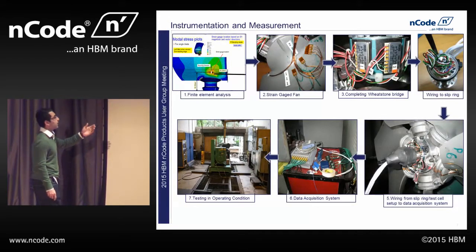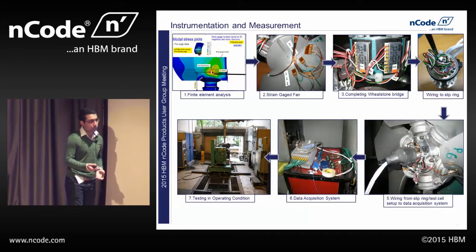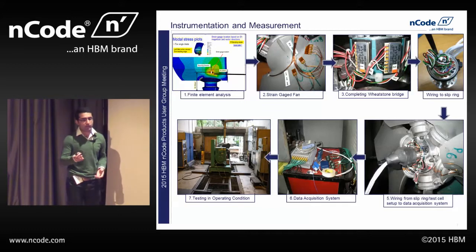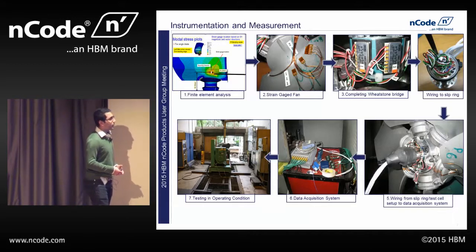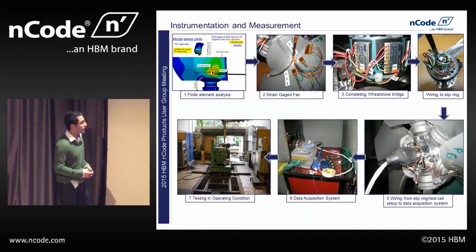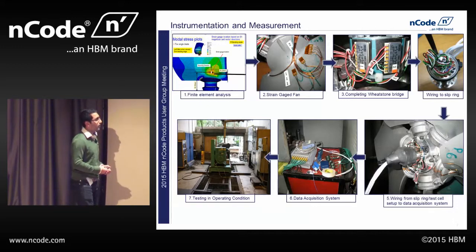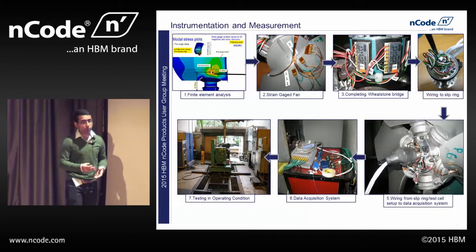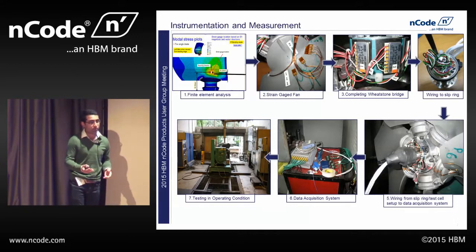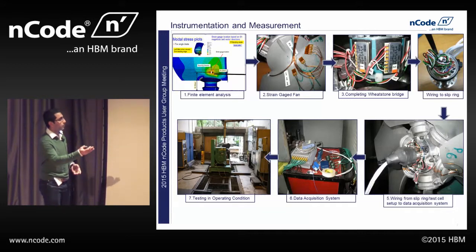For instrumentation, we do a pre-stress modal analysis — essentially a linear modal analysis with load stiffening. The natural frequencies of the fan blade change as the speed of the genset increases, so we need to take that effect into account. We end up applying strain gauges to the hotspots. We decide whether we need rosette gauges or single element gauges, and a lot of careful strain gauging is required. The wires coming out of the strain gauges go to the bridge completion module to complete the Wheatstone bridge. We complete the bridge before it goes to the slip ring because of noise issues — we have seen noise creeping in if we complete the Wheatstone bridge after it has passed through the slip ring.